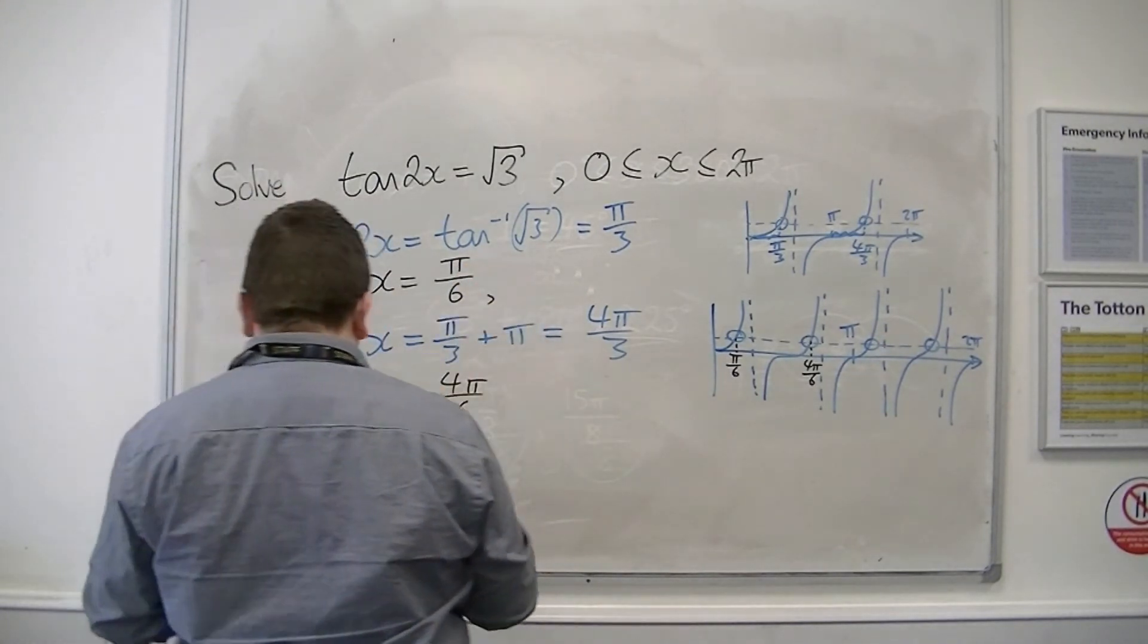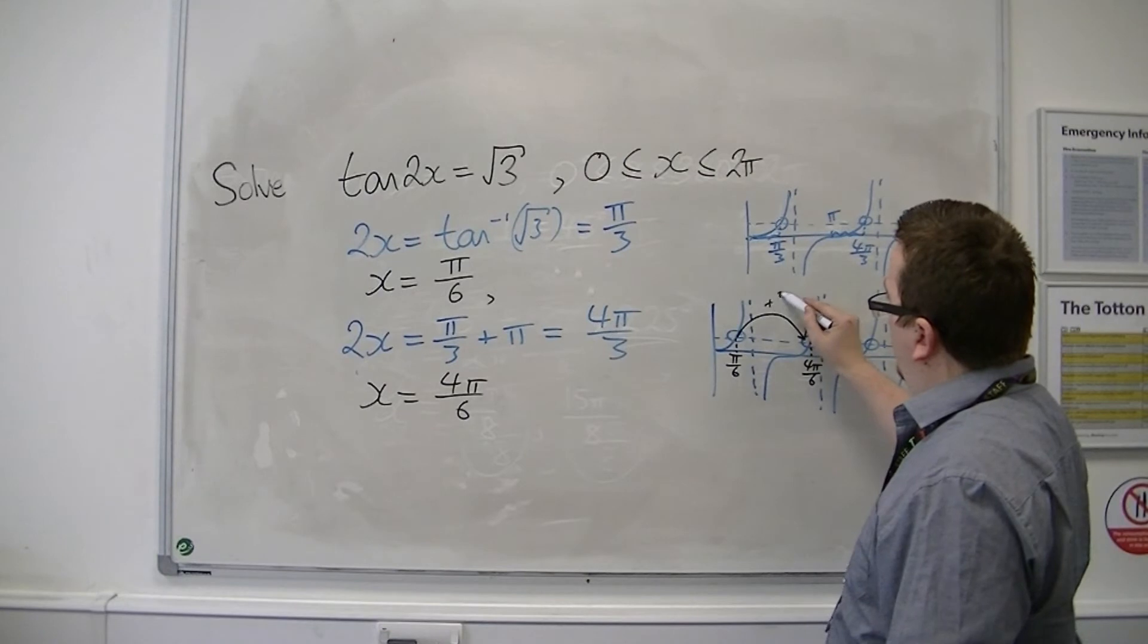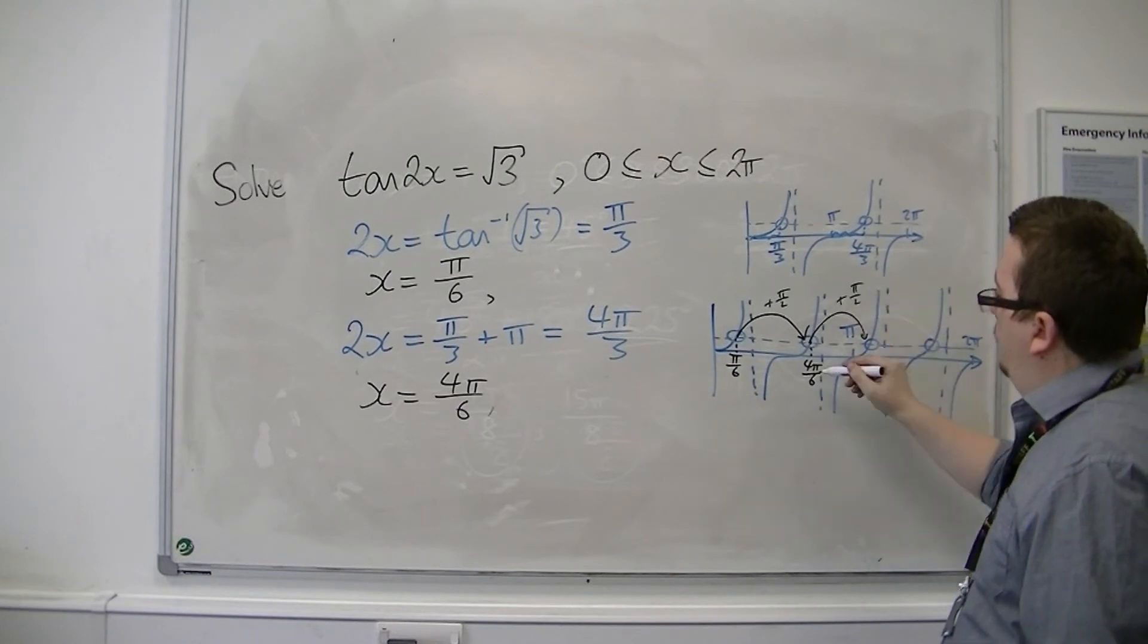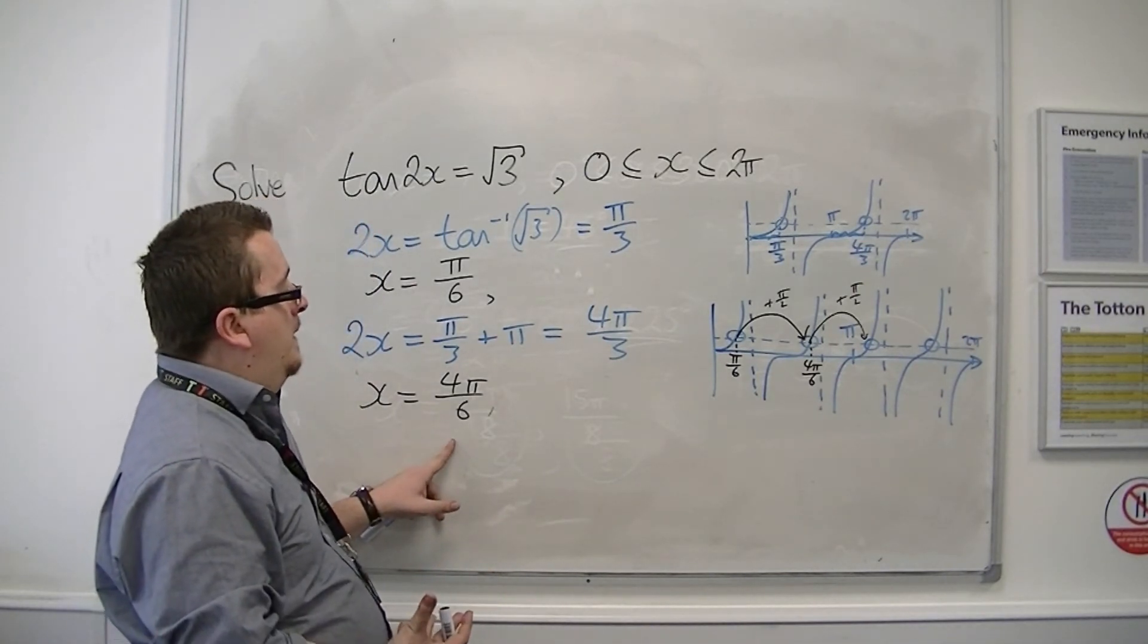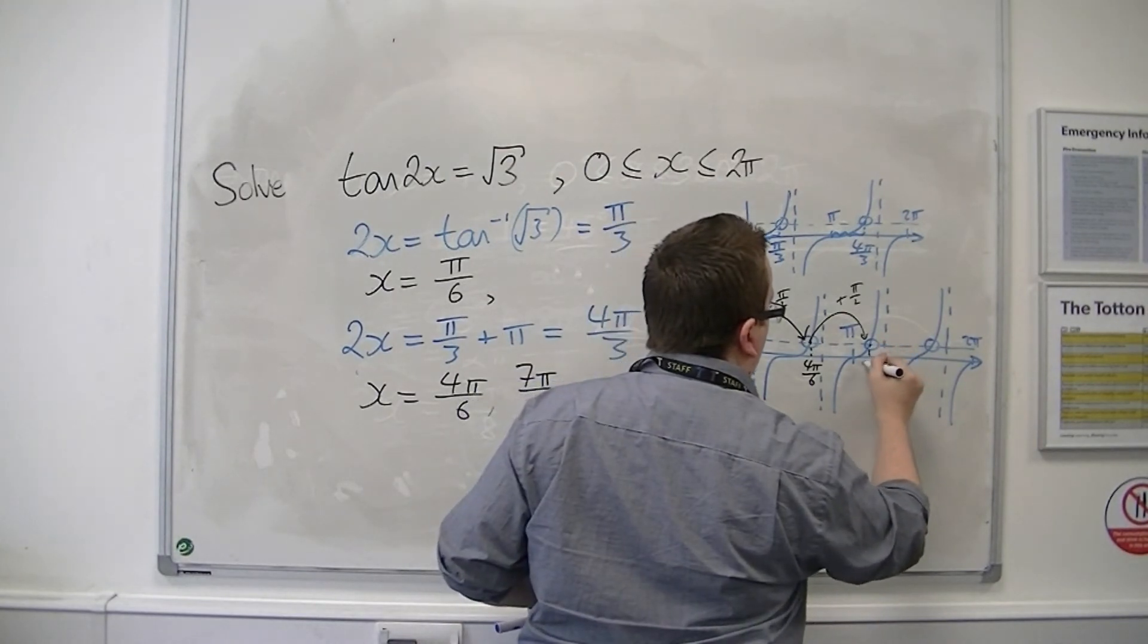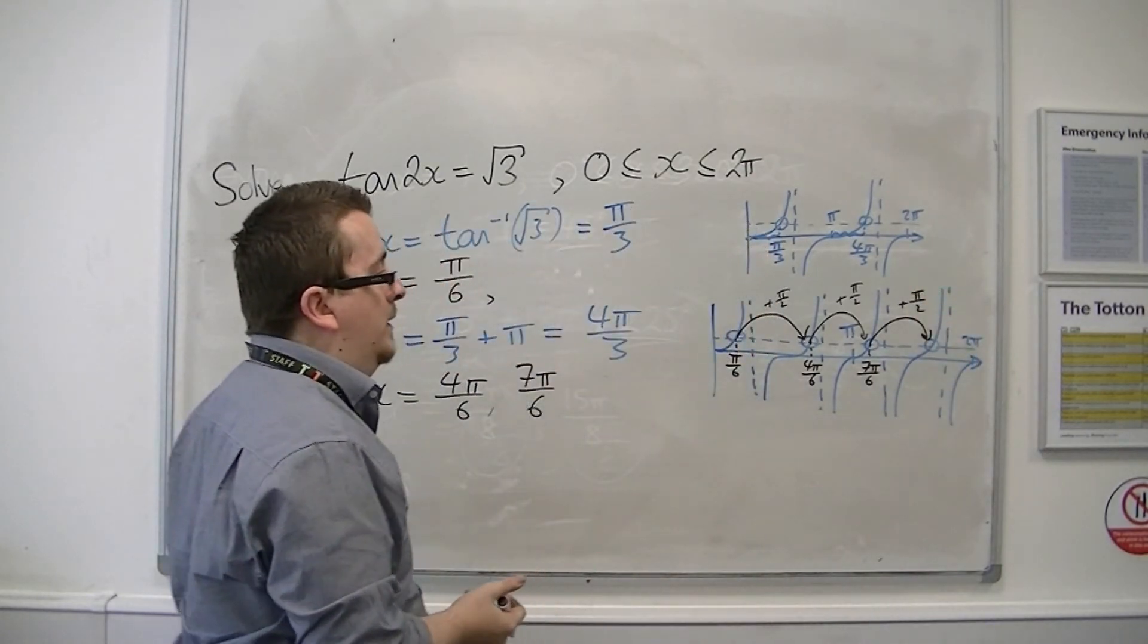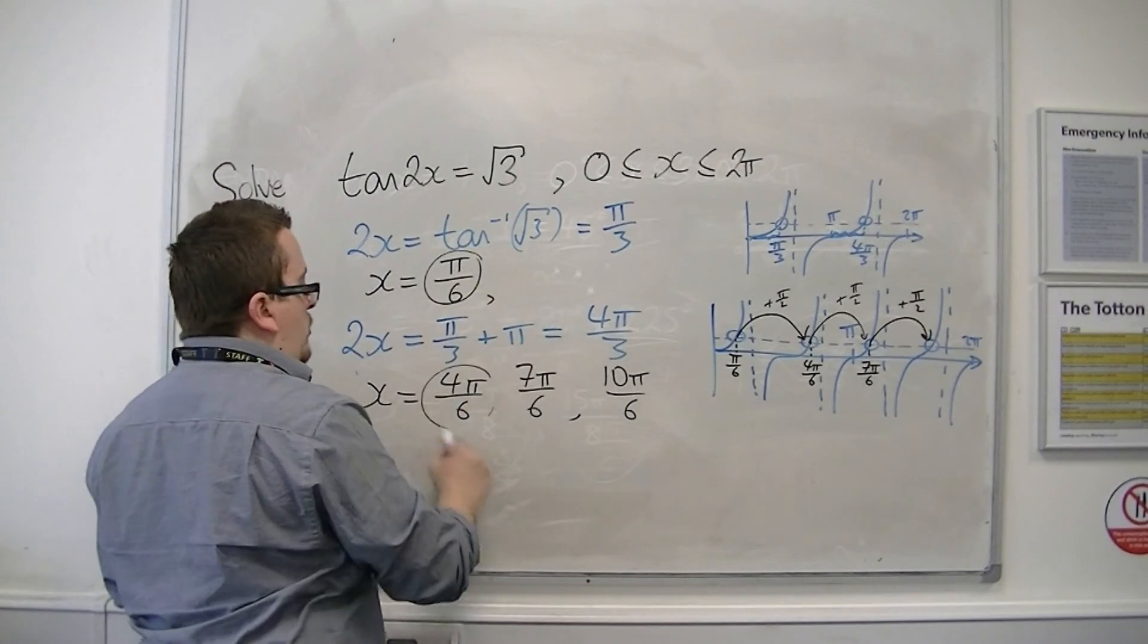Now if you add pi over 2 to pi over 6, you get 4 pi over 6. What you've done is you've just hopped from that solution to that solution. So that's fine, we've already got that one. We don't need to write that one down again. So if I add pi over 2 to 4 pi over 6, so 4 pi over 6 plus pi over 2 will get me 7 pi over 6. And then I can add pi over 2 to that to get the next solution. So that would get me 10 pi over 6. So these are actually my four solutions.